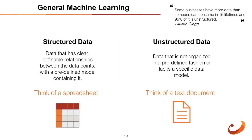General machine learning: data structures refer to specific ways of storing and organizing data. Data can also be unstructured — data that isn't organized in a predefined fashion or lacks a specific data model. Structured data has clear, definable relationships between data points with a predefined model, often held in tables such as Excel files or SQL databases. In contrast, unstructured data is typically stored with a NoSQL database. The vast majority of data is in unstructured formats. Machine learning techniques can help order unstructured data and turn it into structured data.